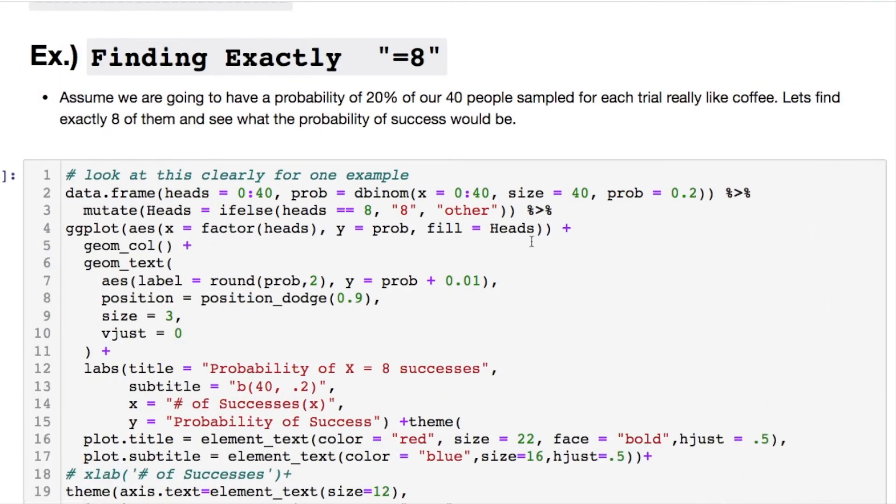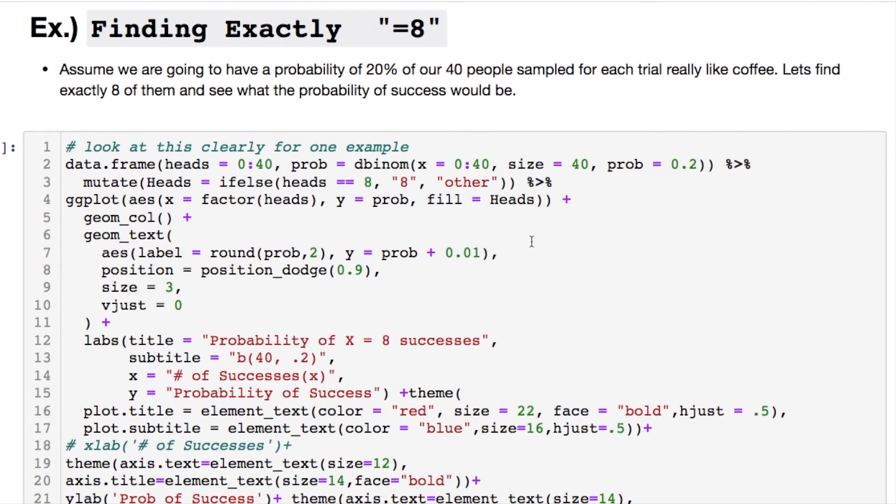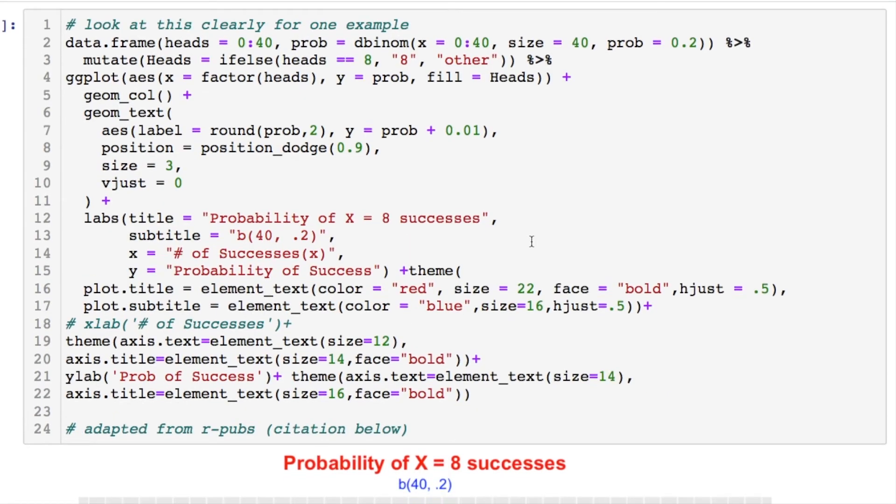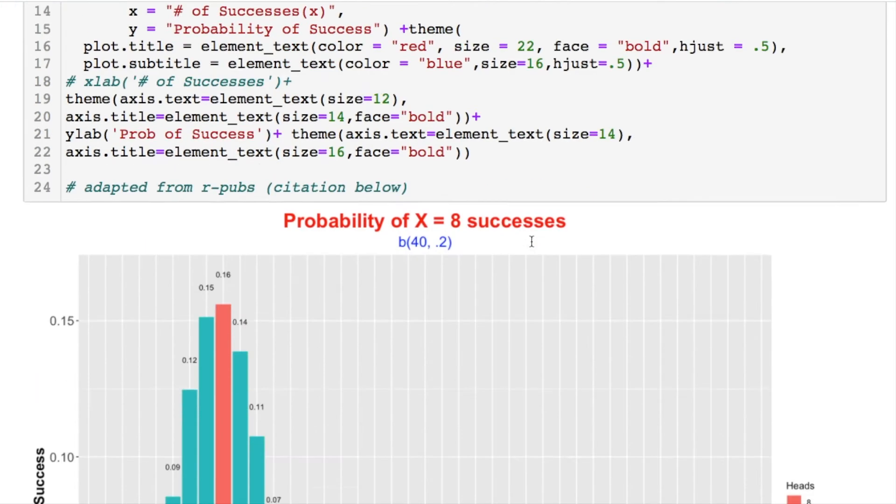Chance of finding exactly 8. Assuming that we're going to have a probability of 20 of our 40 people samples for each trial who really like coffee. Let's see what the probability of success would be if we had exactly 8 people out of 40 who liked coffee. Feel free to pause this if you want to write this down or figure out how to decipher this.